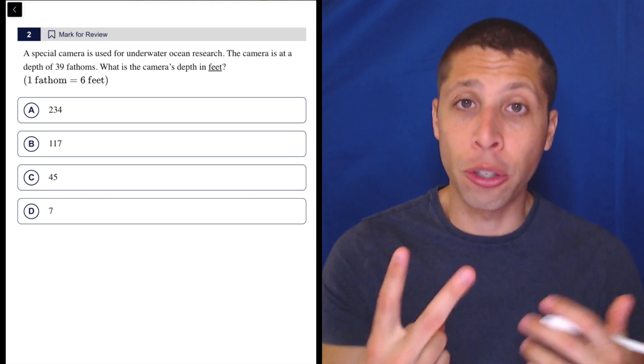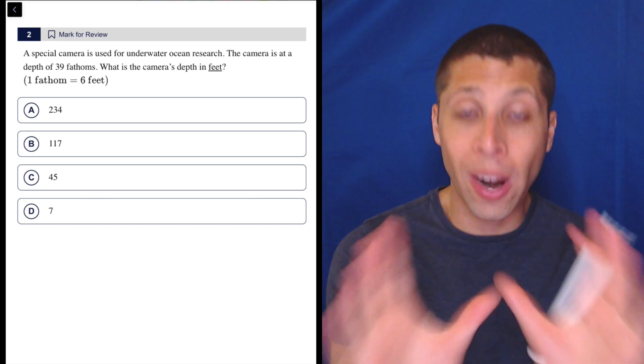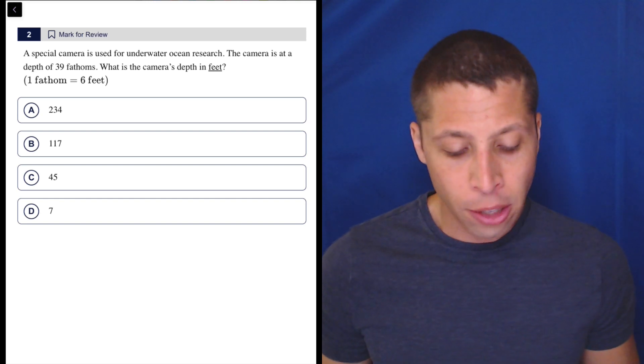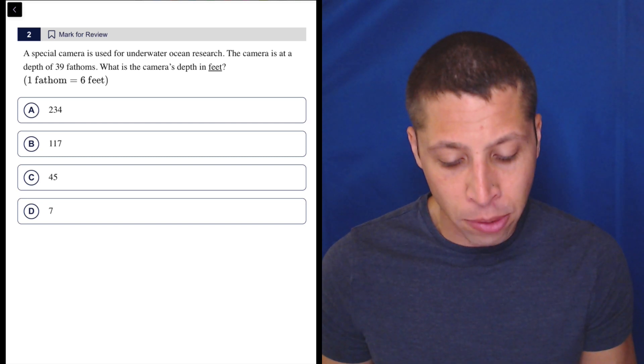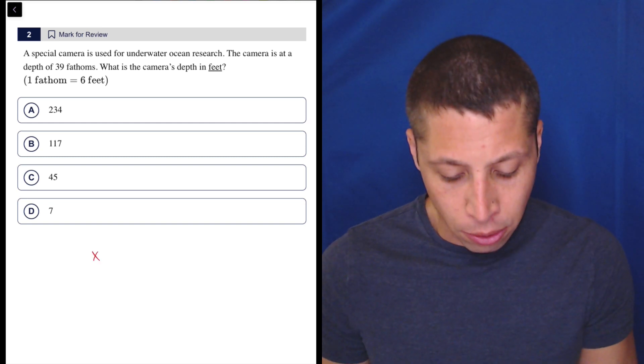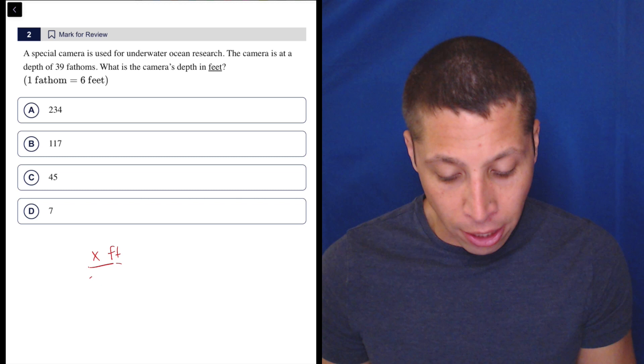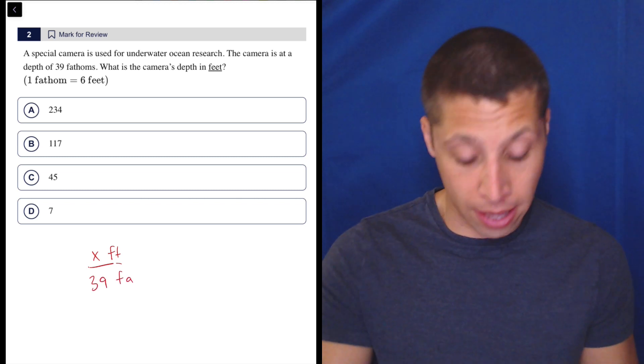And setting this up, since there's only two units, is very easy. We're just making two fractions and setting them equal to each other. So in this case, the special camera is there, okay, the camera is at a depth of 39 fathoms. What is the camera's depth in feet? So I'd say, okay, I don't know the feet, but I do know that 39 fathoms is kind of the equivalent to that.